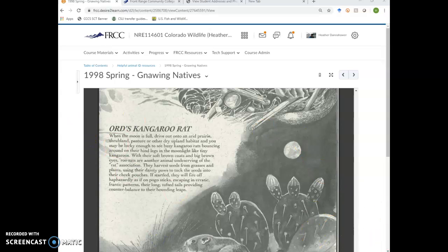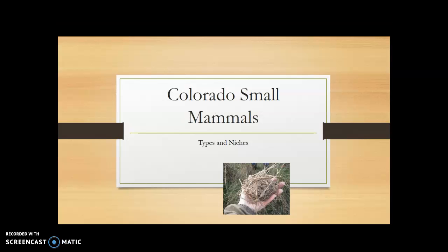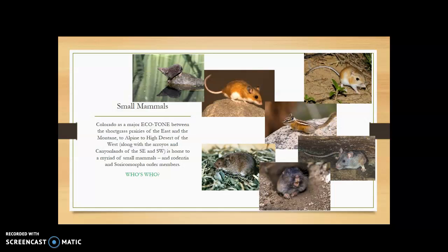Go ahead and read through that because it provides a lot of really good information about our small mammals — native versus non-native — and how to tell the different kinds of animals apart. I'd also like to go over specifically how to tell the difference between some small mammals. As we've talked about in class, Colorado is home to a lot of small mammals, partly because we have so many different ecosystem types. They're not all mice, and they're not even all rodents.